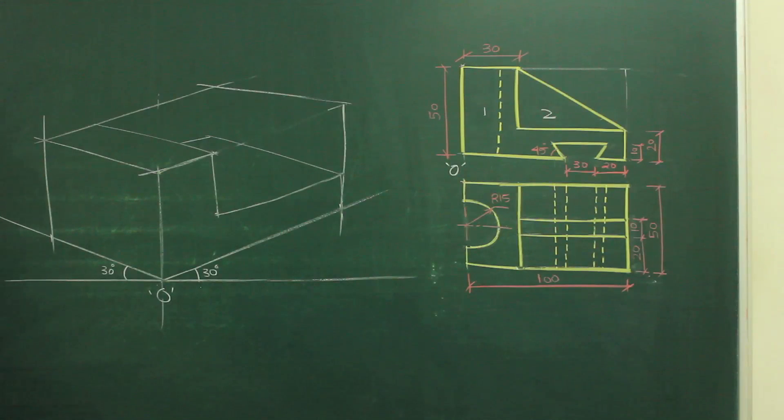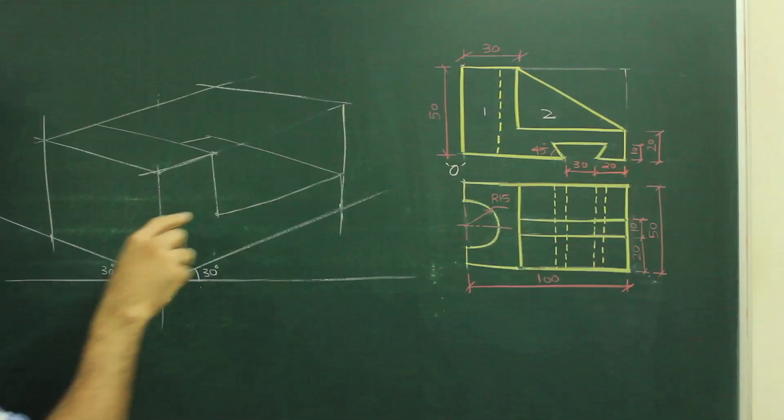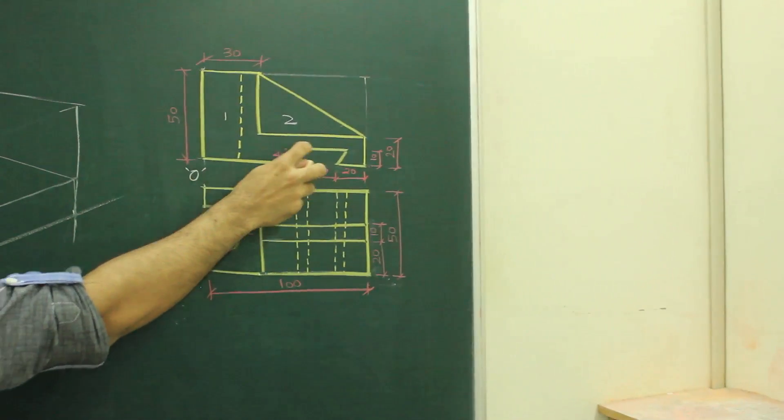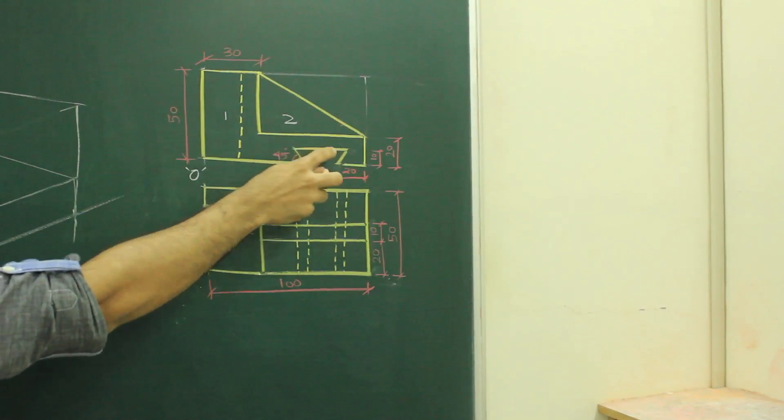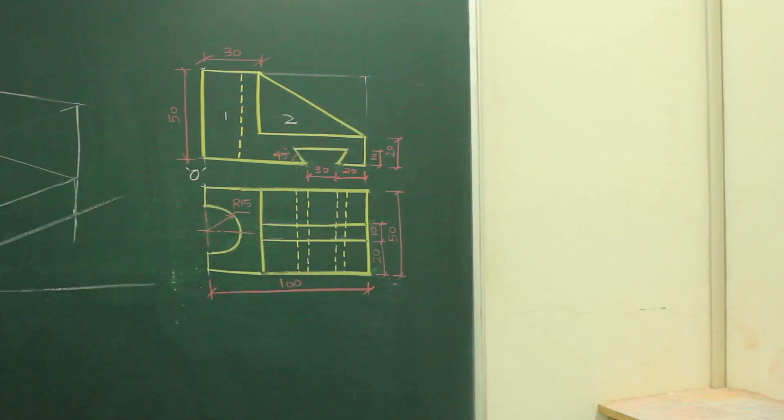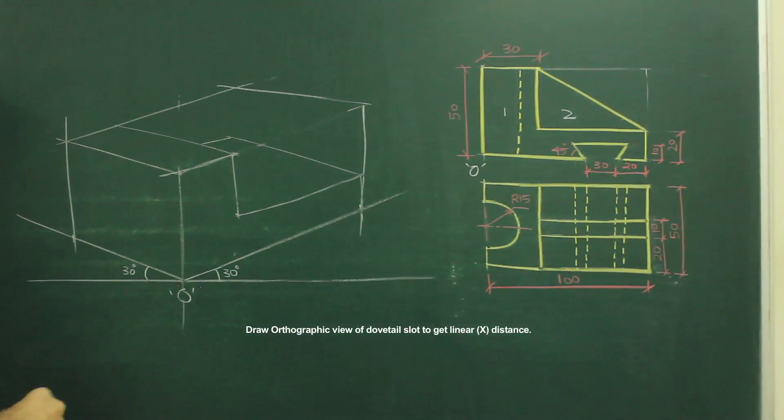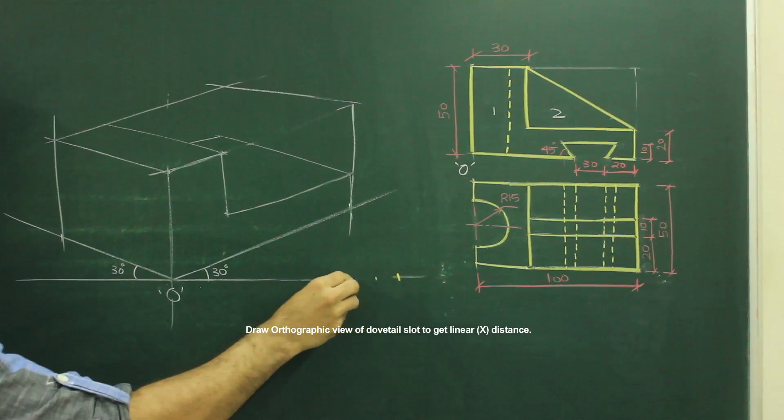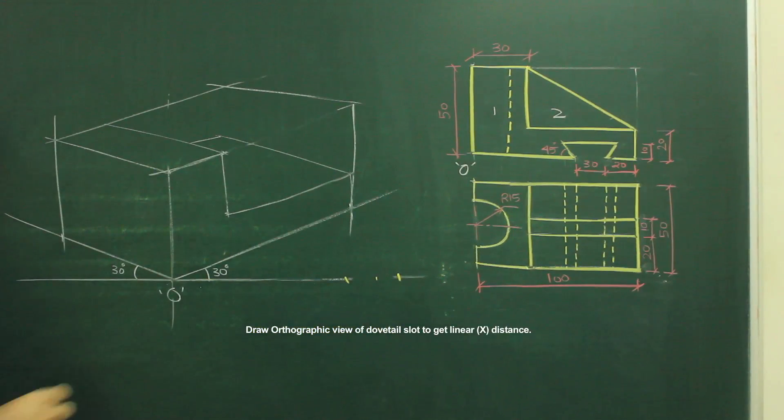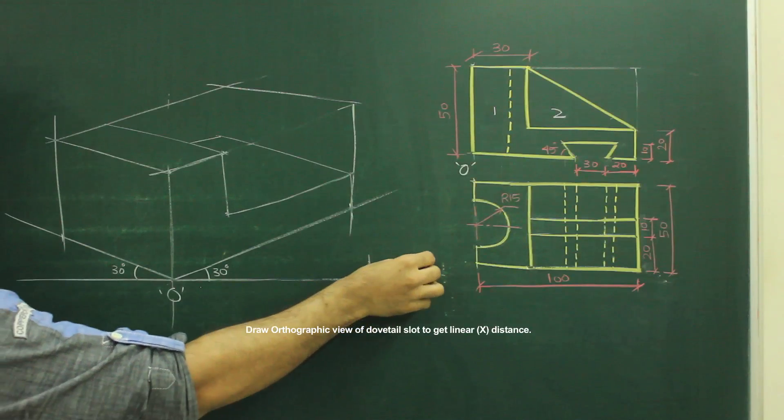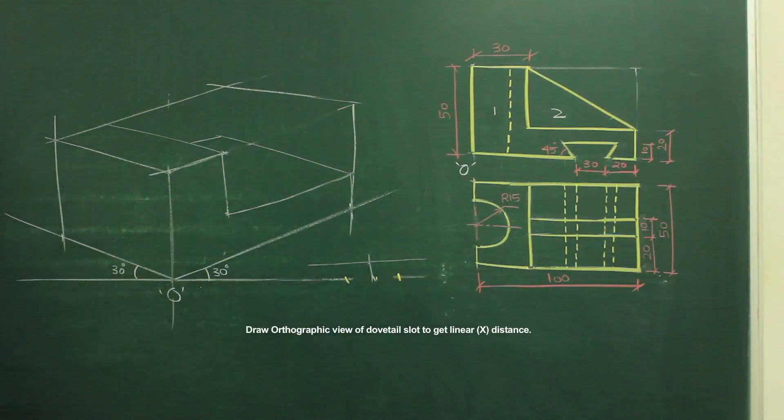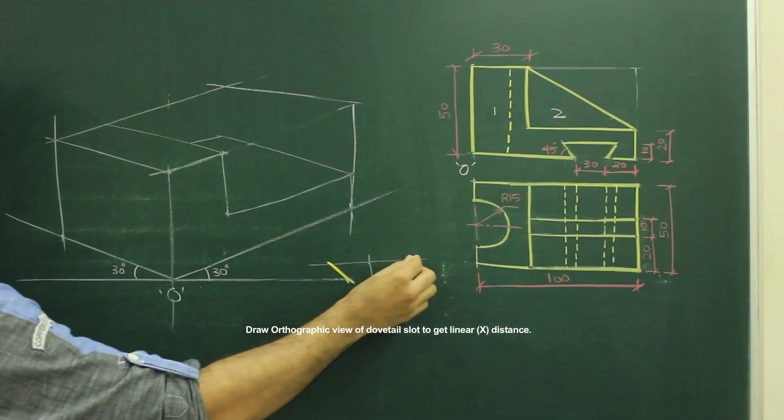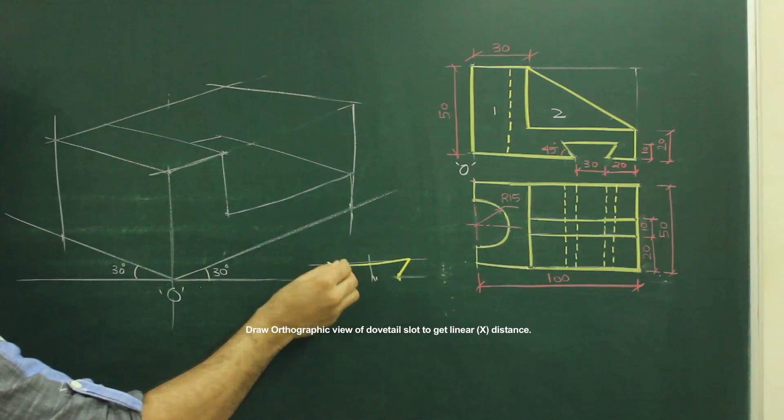Now what we need to draw, we need to draw dovetail slot. If you see this slot in front view, this part, see this. So what we need to do, we need to draw it over here. Take 13. Then go up by 10, from center, you go up by 10, draw horizontal line, then you draw 45, 45 degree. Then you join this.